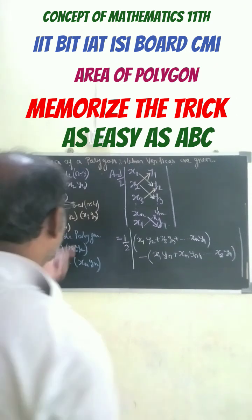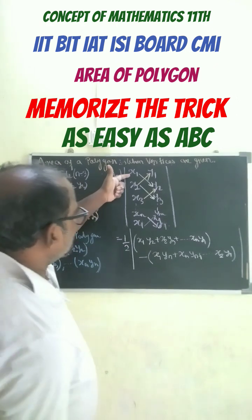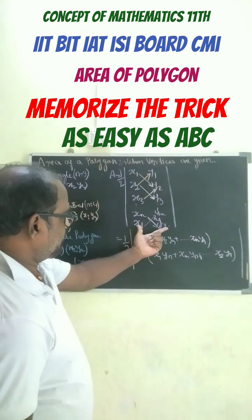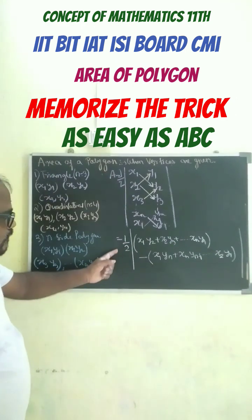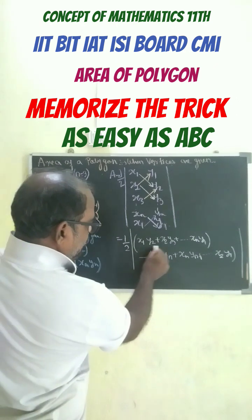In the same way, for quadrilateral or for n-sided polygon, we write x1, x2, x3, till xn and y1, y2, y3, till yn. So the area of the polygon will be half into x1, y2 in this way format.